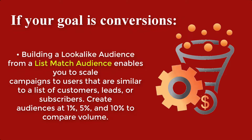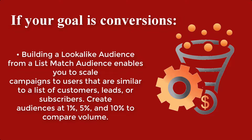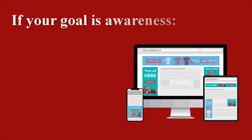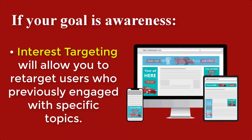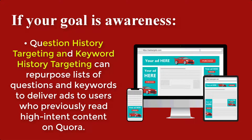Building a look-alike audience from a list-matched audience enables you to scale campaigns to users similar to a list of customers, leads, or subscribers. You can create audiences at 1%, 5%, and 10% to compare volume. And lastly, if your goal is awareness, you have website traffic targeting — the key to delivering ads to users who previously visited all or specific pages of your website. You have interest targeting to retarget users who previously engaged with specific topics. And question history targeting and keyword history targeting can repurpose lists of questions and keywords to deliver ads to users who previously read high-intent content on Quora.